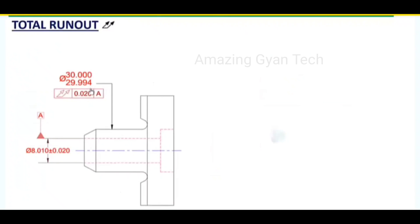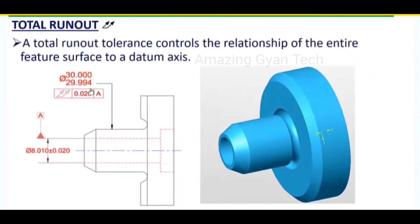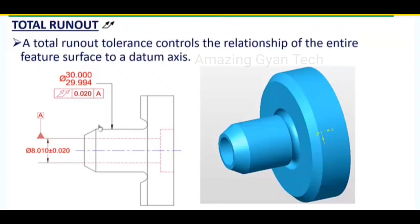Now we will see total runout. Total runout is an extended version of circular runout. In this diagram you can see it is applied for the entire feature surface. The feature diameter 30 mm OD is being controlled with respect to datum surface A. With respect to this datum hole A, the total runout should be within a wide tolerance zone of 0.020 throughout the entire surface. When it is applied throughout the entire surface like cylindricity, it is called total runout.